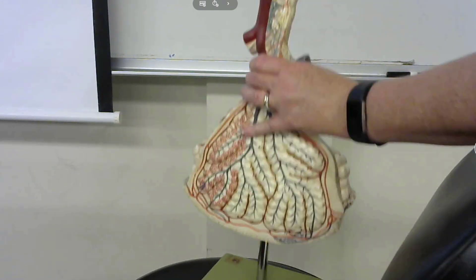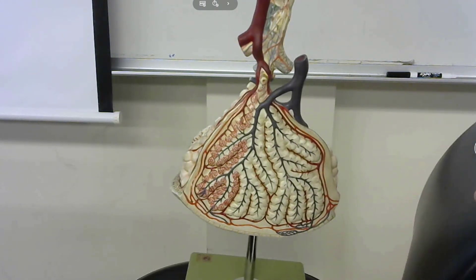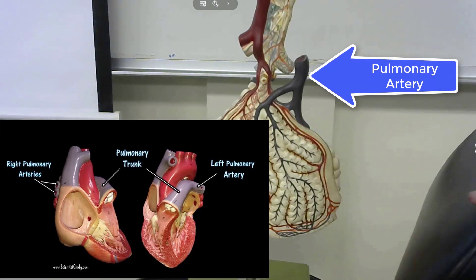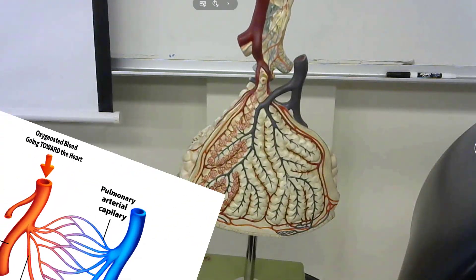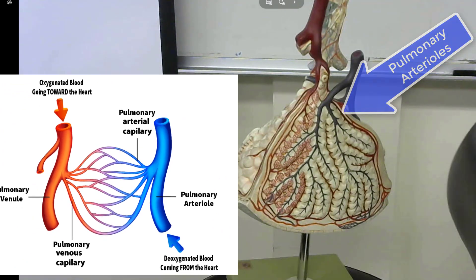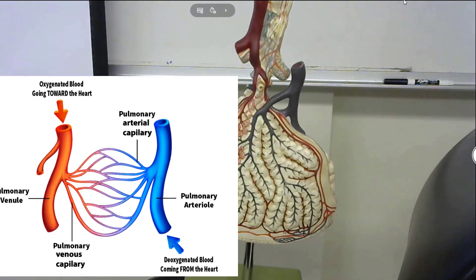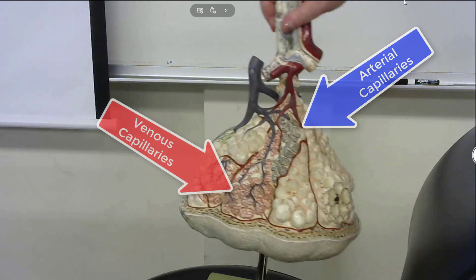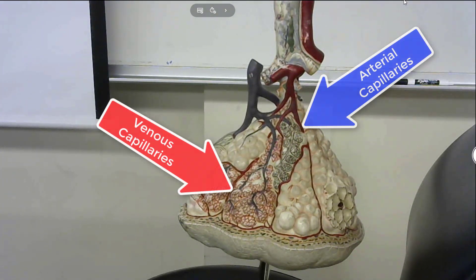For the vascularization seen here in the lungs, the pulmonary arteries are colored blue because they bring deoxygenated blood from the heart to the lung. The pulmonary arteries branch off to form pulmonary arterioles, and the arterioles branch again to form the smallest blood vessels, which are the capillaries. The arterial capillaries are shown in blue and the venous capillaries are shown in red.